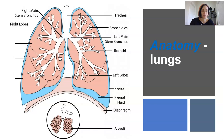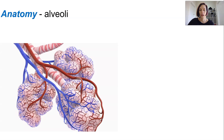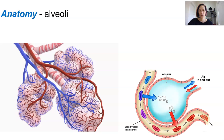Inside the lungs are tiny little air sacs — the chambers where gas exchange occurs — called alveoli. These are like tiny little bunches of grape structures at the ends of the bronchioles. In Latin, alveolus actually means 'little cavity', and this is where gas exchange occurs via diffusion in and out of the capillaries running alongside the wall of the alveoli.